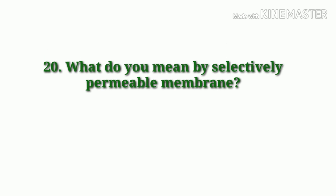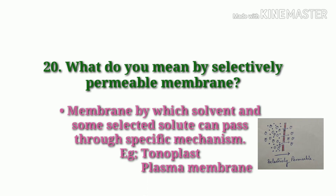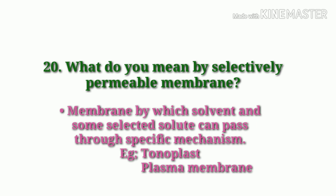What do you mean by a selectively permeable membrane? A membrane through which solvent and some selected solutes can pass through a specific mechanism is called a selectively permeable membrane. Examples: tonoplast and plasma membrane.